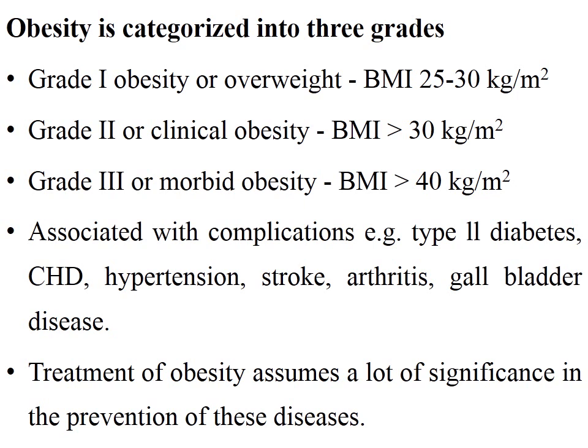Obesity is categorized into three grades: Grade 1 is overweight, where BMI is 25 to 30 kg per meter squared. Grade 2 is clinical obesity, where BMI is more than 30 kg per meter squared. Grade 3 is morbid obesity, where BMI is more than 40 kg per meter squared. These are associated with complications such as type 2 diabetes, coronary heart disease, hypertension, stroke, and gallbladder disease.